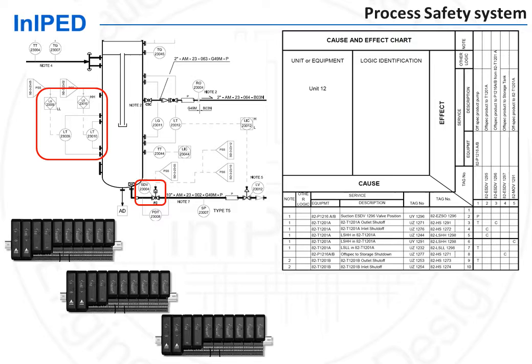As the process safety system performs safety functions, it requires a high level of reliability. The corresponding controllers are either duplicated or triplicated — i.e., instead of one controller there will be three controllers, so that if one fails, the other two will detect the failure and take over and implement the action.